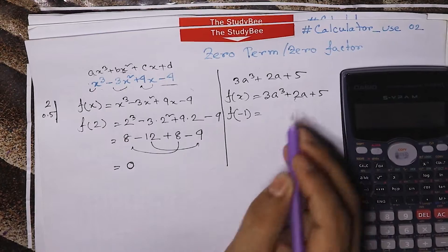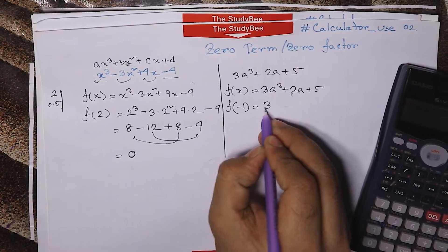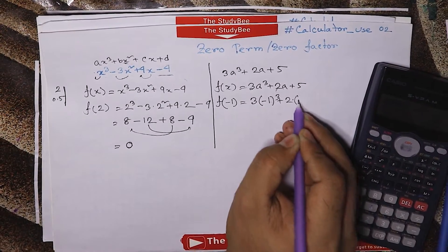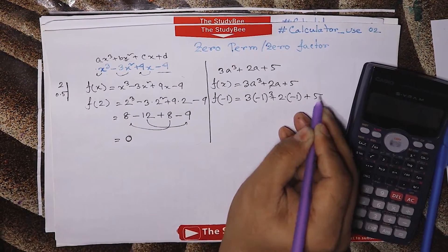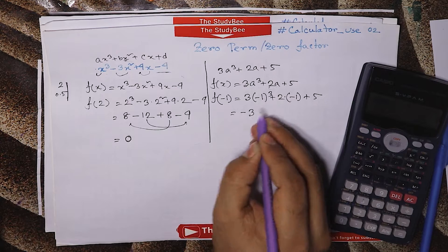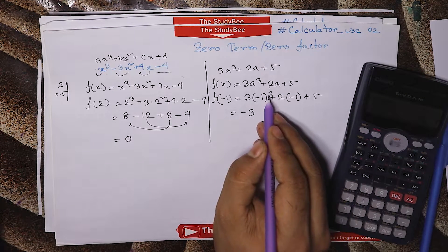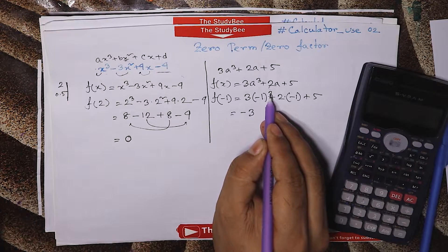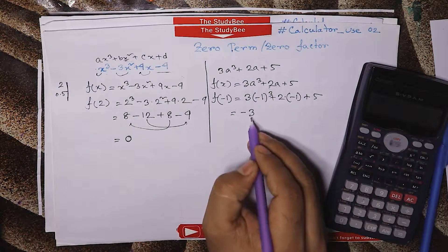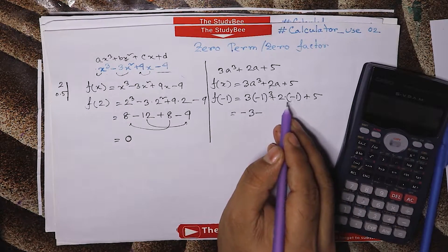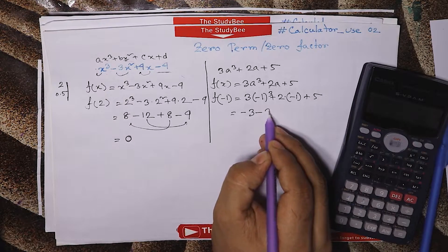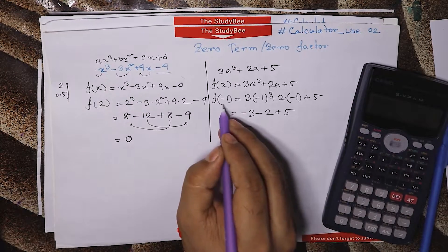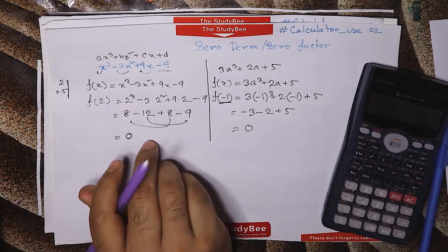If we get to the end of this, we will add 0. So, you will have to check that 3 into minus 1 cube plus 2 into minus 1 plus 5. So here minus 3, we will go to minus 1 cube, and we will add minus 2 plus 5. So here minus 3 minus 1 plus 2 plus 5, so here minus 2 plus 5 is 0, so here is minus 1.